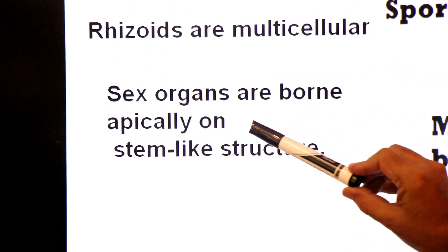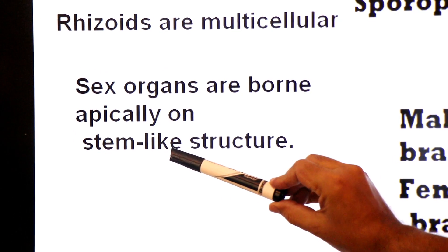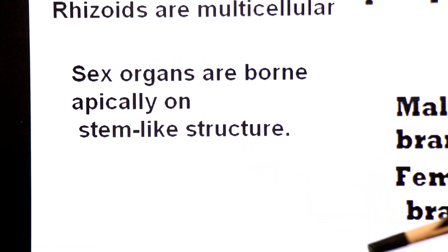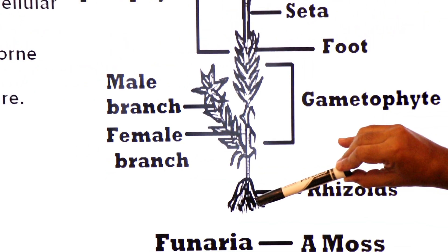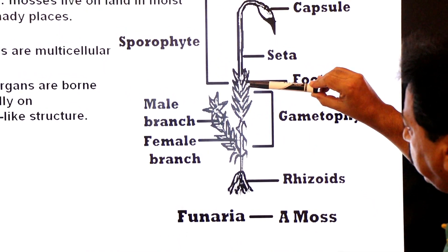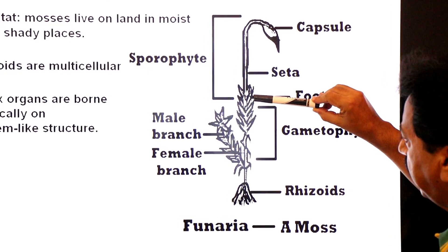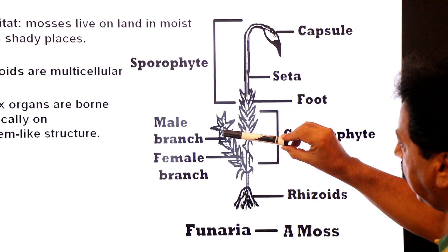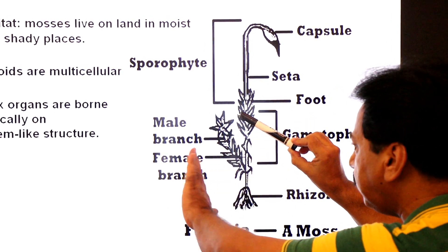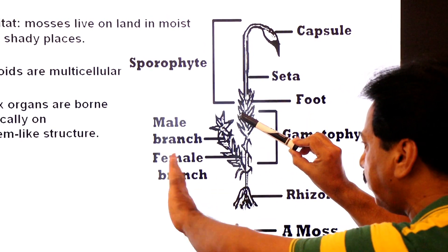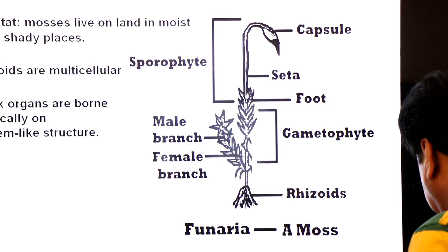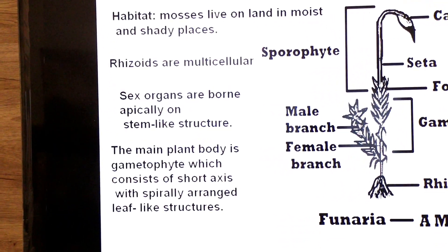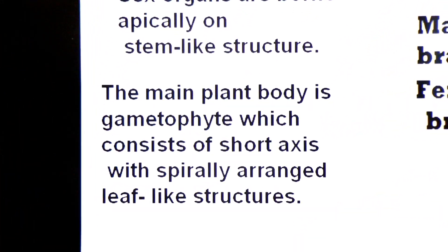Sex organs are borne apically on a stem-like structure. The central branch is the female branch having archegonia, and the lateral branch is the male branch having antheridia. The main plant body is the gametophyte.